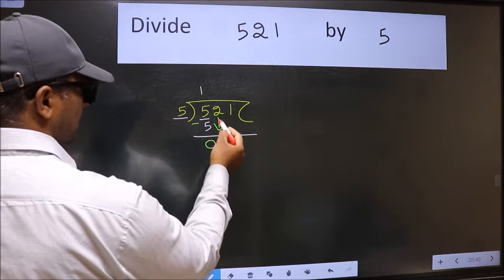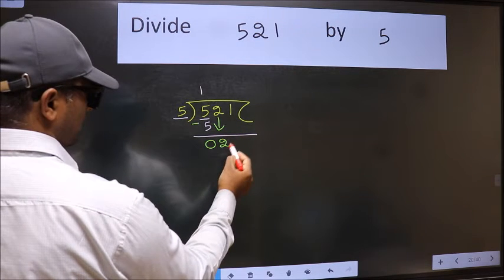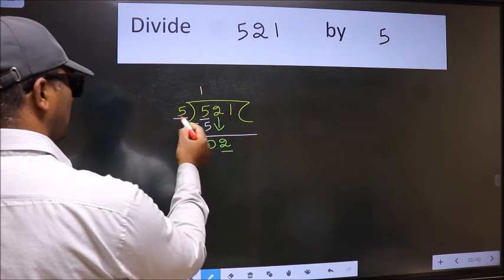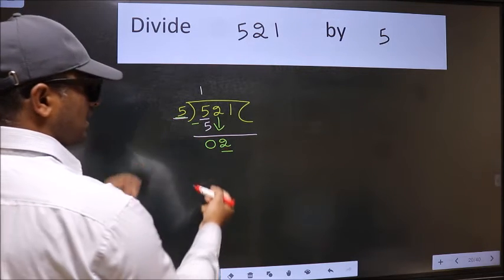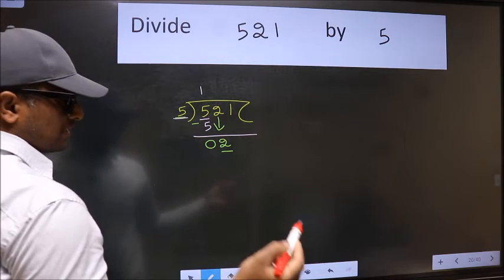After this, bring down the next number. So 2 down. Now here we have 2 and here 5. 2 is smaller than 5, so we should bring down the second number.